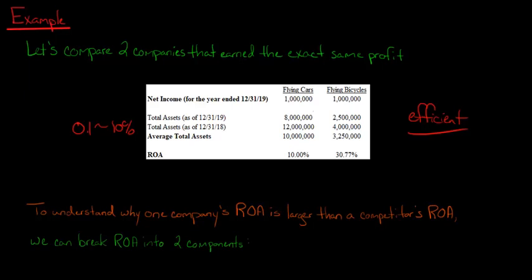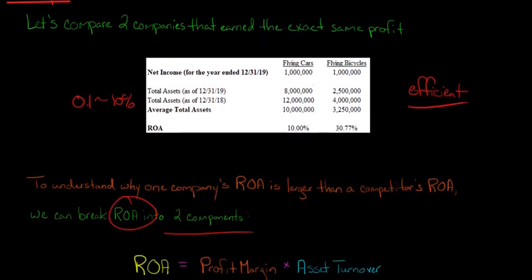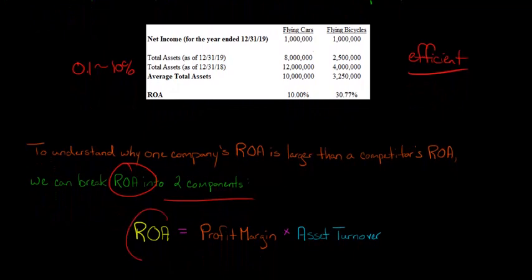Now, when we're comparing companies, we can look at the same company's ROA over time. So we can look at Flying Bicycles' ROA over time. Is it increasing? Is it decreasing? Here, we're comparing it to the ROA of a competitor. But if we want to say, why specifically is Flying Bicycles, why is their ROA so much better? And if we want to dig deeper, we can actually break the ROA into two separate components. And this is called ROA decomposition. ROA is actually equal to a company's profit margin times its asset turnover. And we'll talk about how to calculate those ratios and do the ROA decomposition in the videos to come.